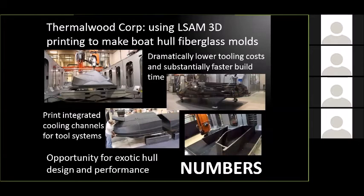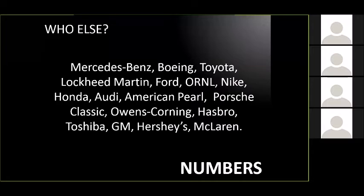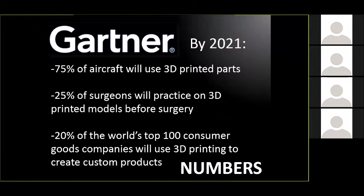We've got more information on the boating industry, everything from hulls to fiberglass applications. Then I focus on the names people recognize that are announcing additive applications — Toshiba, everybody from Hershey's chocolate to Hasbro toy makers, looking at additive production for research, for switchover, whatever the case may be. You're just seeing these companies that we rely on for contracts saying, 'We're going additive or we're looking at additive.' That's a warning sign. A new Gartner survey came out with predictions that by 2021, 75% of aircraft would have 3D printed parts on them, and surgeons are going to be practicing more with additive.